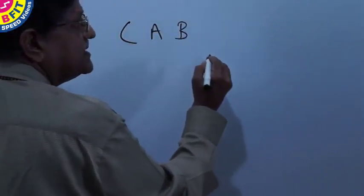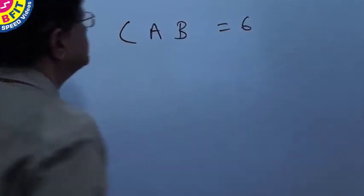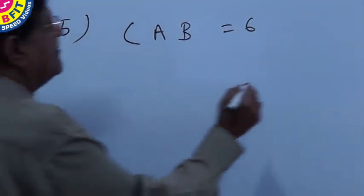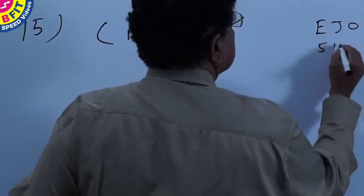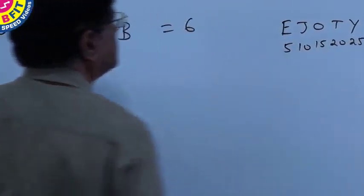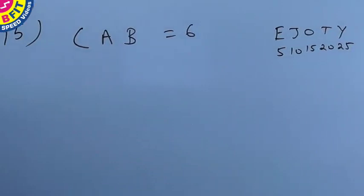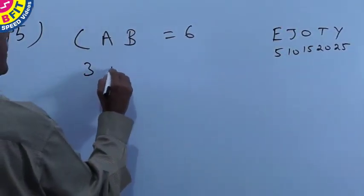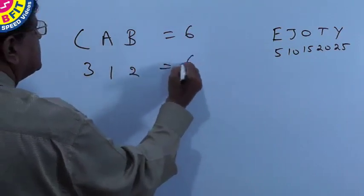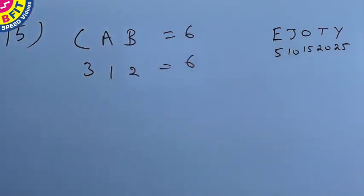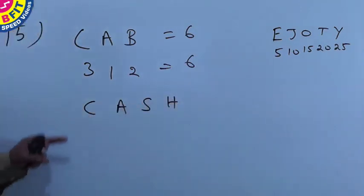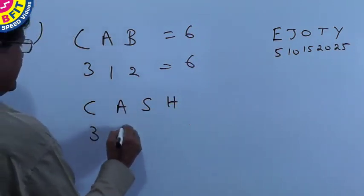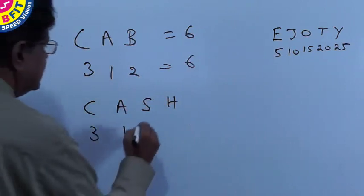CAB is 6. Let us remember our favorite EJOT. CAB: C=3, A=1, B=2, and 3+1+2 is equal to 6. So obviously the code is based on the positional value. Now what is the code for CASH? C is 3, A is 1, S: PQRST, S is 19.